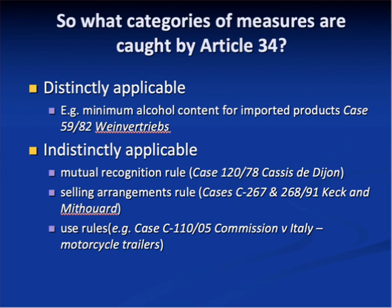What categories of measures are caught by Article 34? They can be distinctly applicable measures or indistinctly applicable measures. Distinctly applicable measures are measures that impose additional requirements on imports, like inspection of imported goods, or rules giving preference to domestic products like bi-national rules or denomination of origin rules. Those are lawful only if they denote distinguishing qualities or characteristics of a product, as illustrated in the Weinvertriever's case, where the Court held that Article 34 was breached by a German rule authorising use of the 'Sekt' or 'Weinbrand' name only for products originating in Germany or in a country where German was the official language.